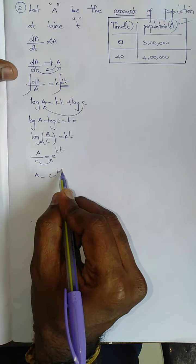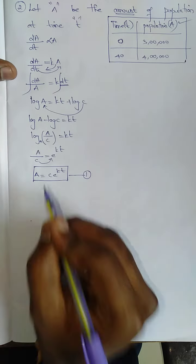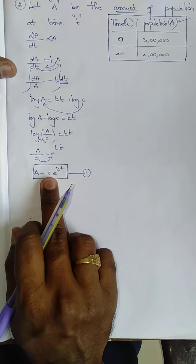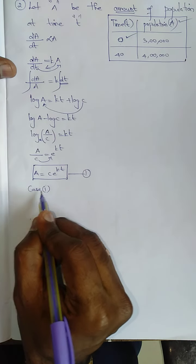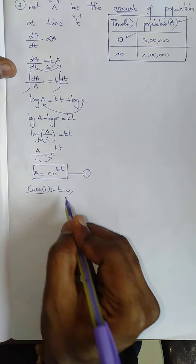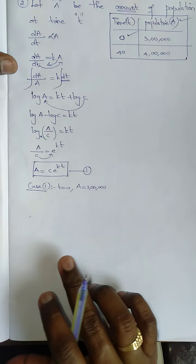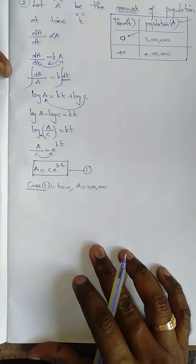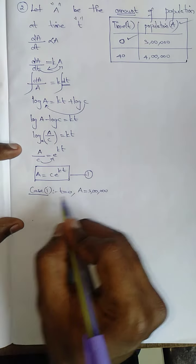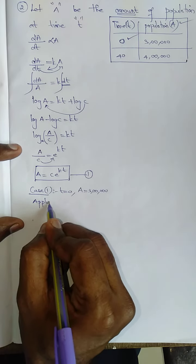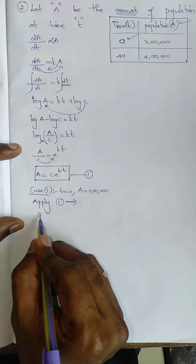Therefore A/C = e^(kt), so A = C·e^(kt). Keep this as equation 1. Now I need to find the constant C. Apply case 1: at t = 0, A = 3 lakh (initially). Substituting into equation 1, I need to find C.